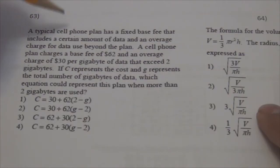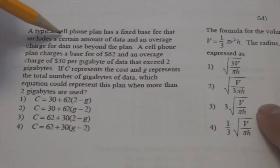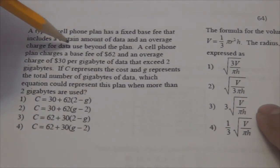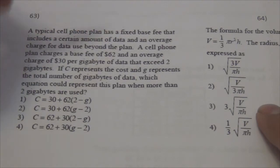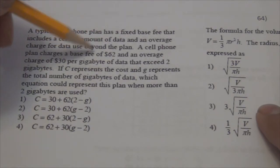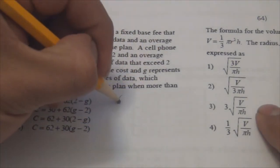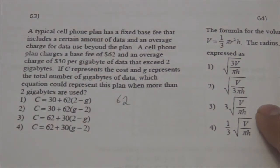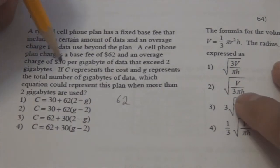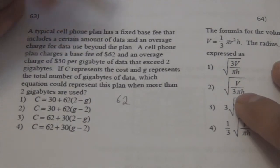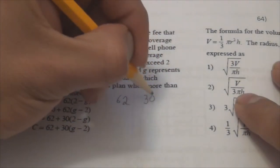A typical cell phone plan has a fixed base rate that includes a certain amount of data and an average charge for data used beyond the plan. A cell phone plan charges a base fee of $62 — so $62 is fixed, you cannot change that — and an average charge of $30 per gigabyte.